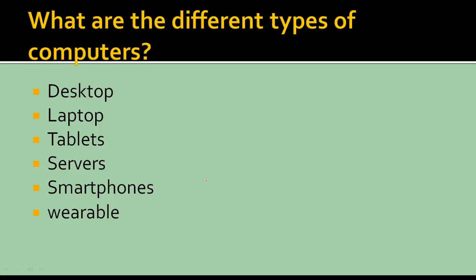What are the different types of computers? There are many types. In real life we generally see a desktop, a laptop, tablets, servers, smartphones — your mobiles — and wearables like Google Glass or something like that. These are nothing but types of computers.